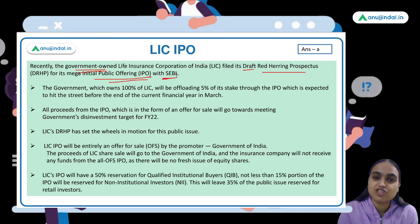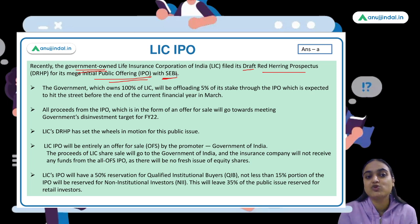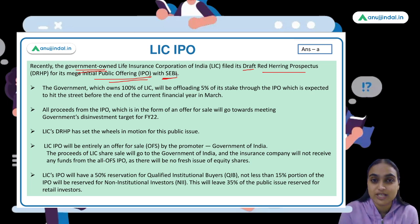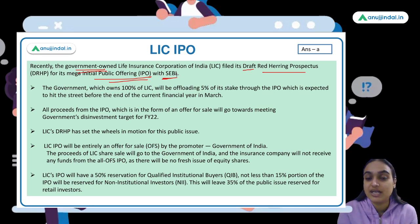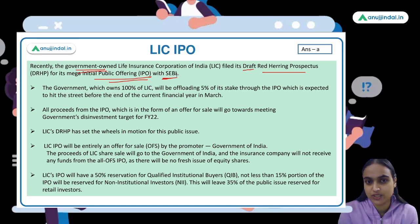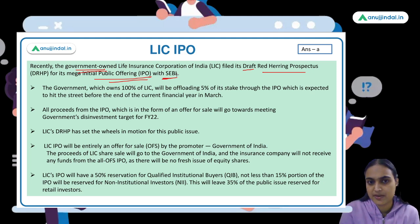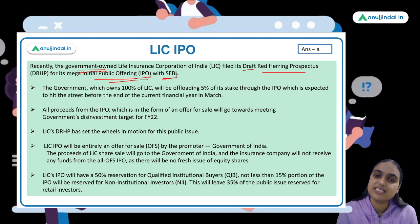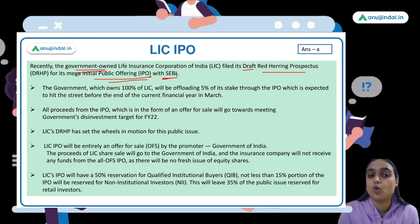Whichever company wants to come up with an IPO — that means it wants to raise funding from the public, issue securities to the public, and get listed on a stock exchange — that's an IPO. When a company lists for the first time on a stock exchange and raises public funding, that's an IPO. Whichever company wants to do an IPO needs to file a prospectus with SEBI. LIC has filed that prospectus with SEBI.